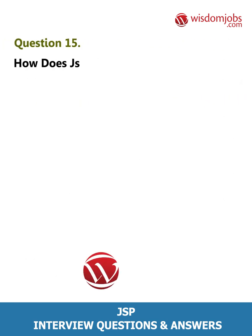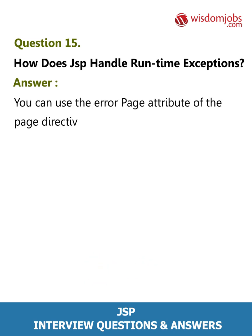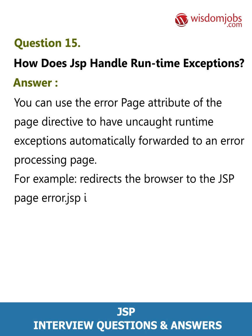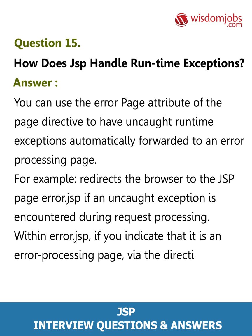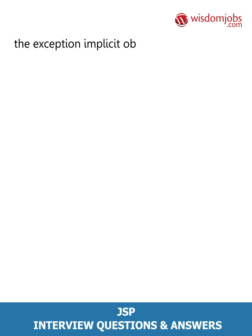Question 15: How does JSP handle runtime exceptions? Answer: You can use the errorPage attribute of the page directive to have uncaught runtime exceptions automatically forwarded to an error processing page. For example, it redirects the browser to error.jsp if an uncaught exception is encountered during request processing. Within error.jsp, if you indicate that it is an error processing page via the directive, the Throwable object describing the exception may be accessed within the error page via the exception implicit object.